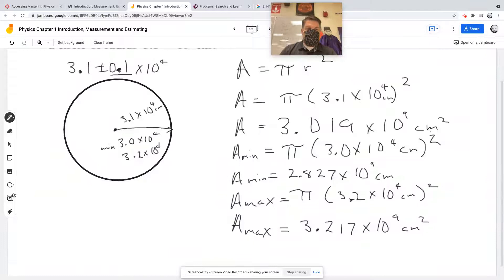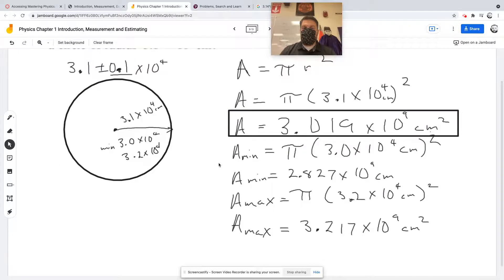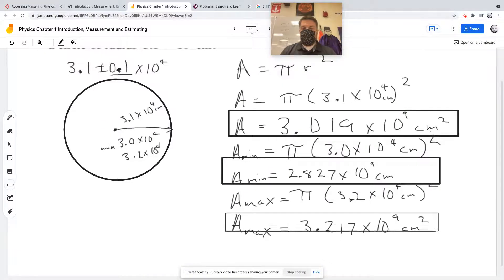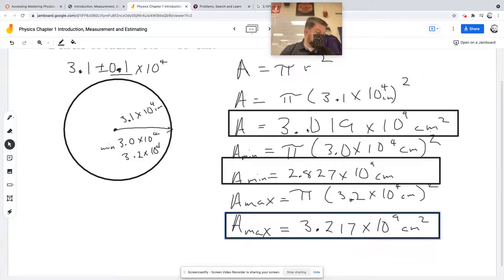There are three values of interest. The calculated value is in the middle of the minimum and maximum. Taking the arithmetic average of the two gives the middle value. But they're asking for the uncertainty of the area.